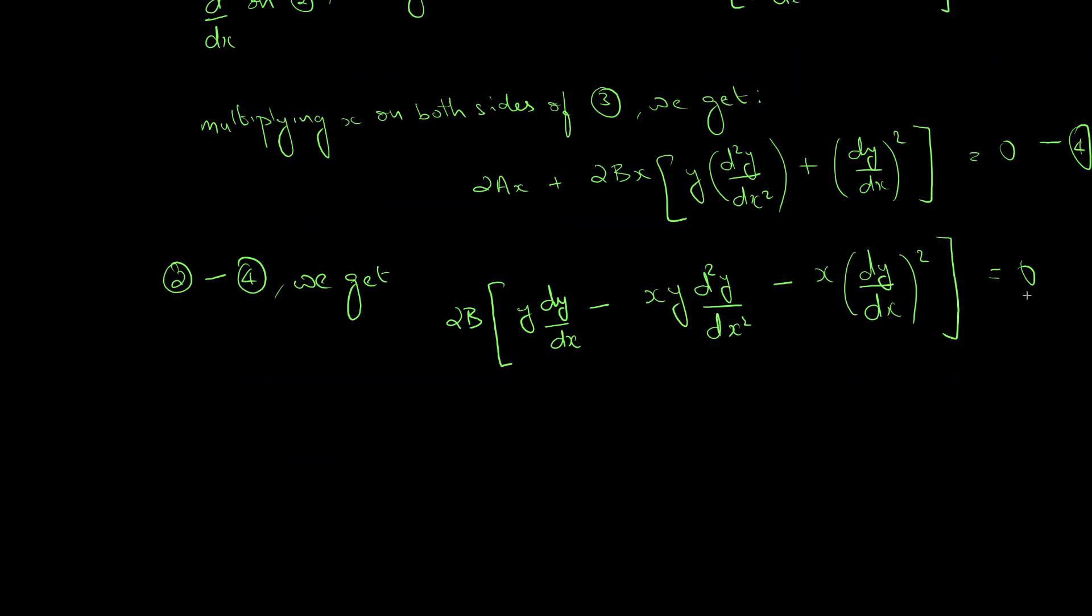Now, from equation 5, we can just simplify this equation. Since B is a constant and B is not equal to 0, this term has to be 0. So, we can write down that therefore, y into dy/dx minus xy d²y/dx² minus x into dy/dx the whole square equal to 0.